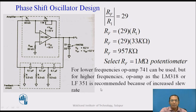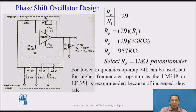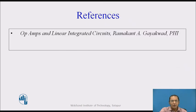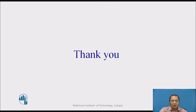If we are using a µA741 op-amp, it is limited by its low slew rate. So if we want to design an oscillator at higher frequencies, we must use an op-amp with a higher slew rate, such as the LM318 or LM351. With that, we come to the end of this session, in which we have discussed the design of the phase shift oscillator. The reference for this session is Op-Amp and Linear Integrated Circuits by Ramakant Gayakwad. Thank you very much for attending the lecture, and see you for the next lecture.